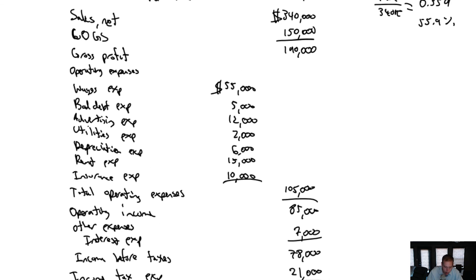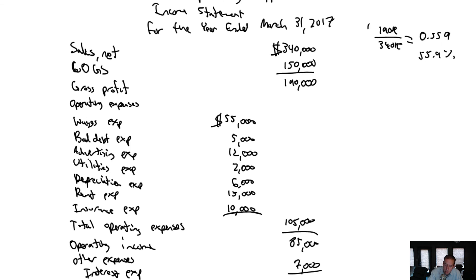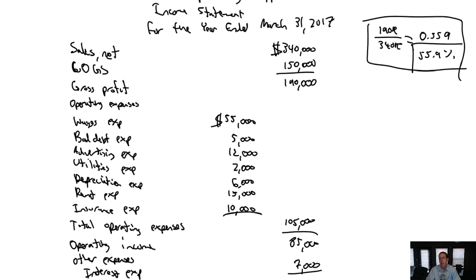There's our income statement, and there's our gross profit percentage: 55.9%. That's an important number because it tells us basically the size of the average markup at the company, and it's useful to know. I hope this video has been helpful. In the next video, we will prepare a statement of changes in shareholders' equity for the company. Stay tuned.